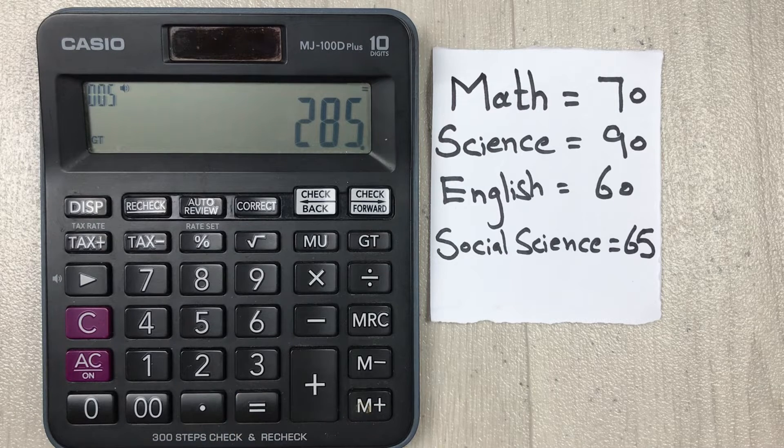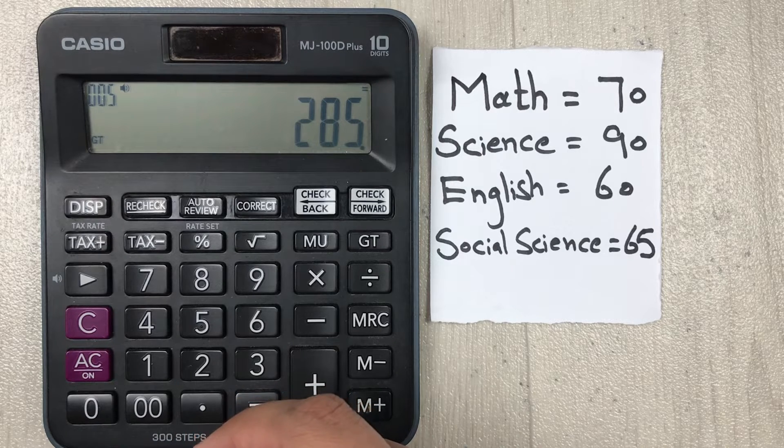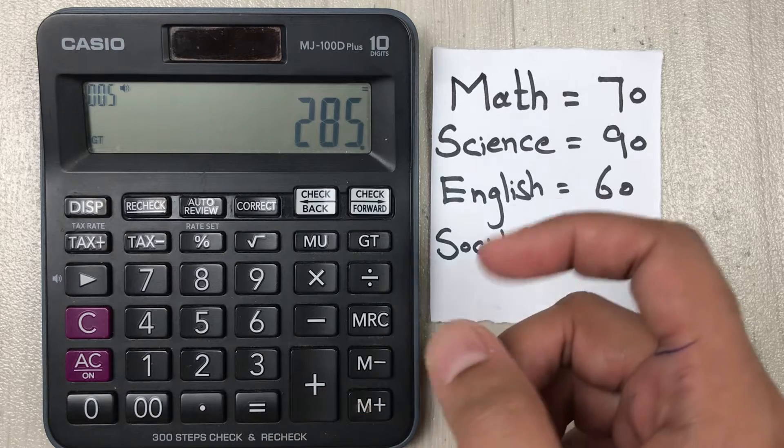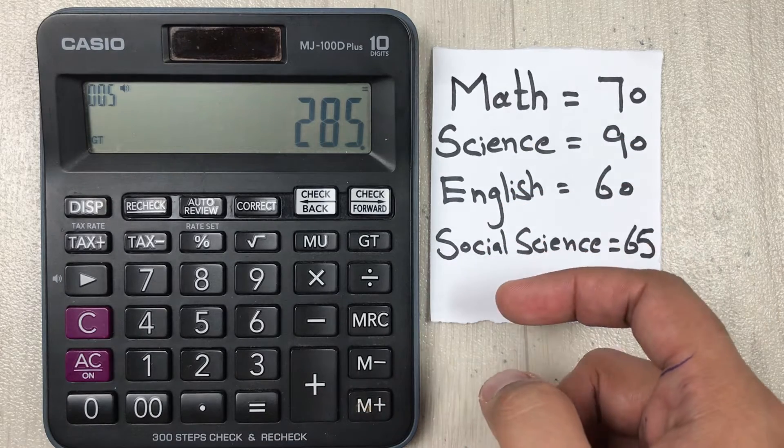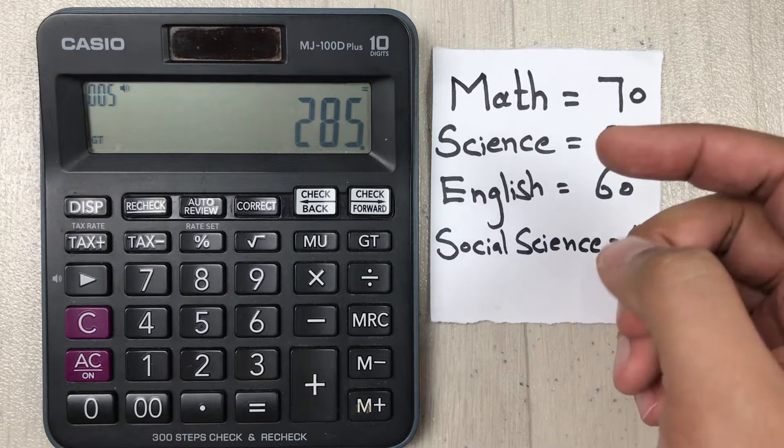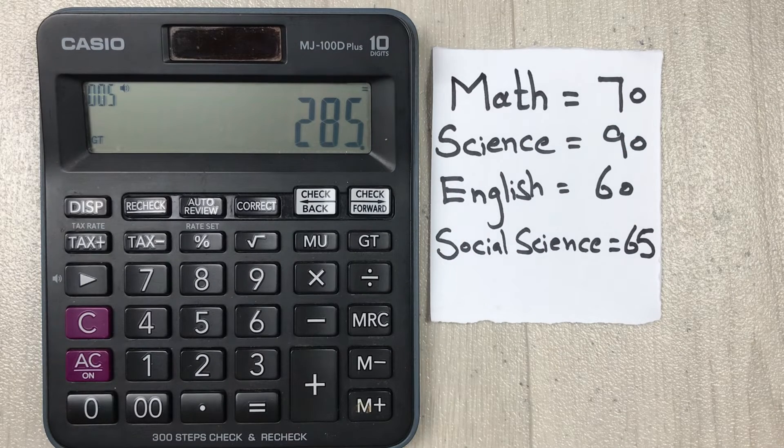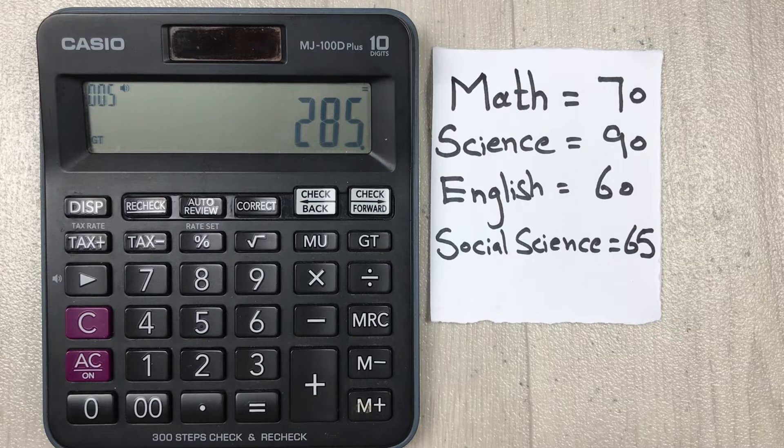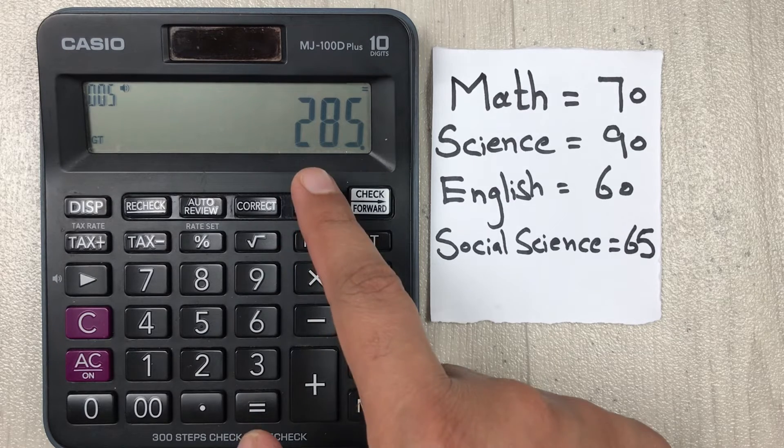Then in the second step we have to count the number of subjects. So here we have one, two, three, four. Total we have four subjects. And then in the third step we divide this 285 by four, by the count of these subjects.